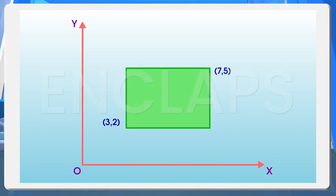How to find out? Which of the given two coordinates is the coordinate of the lower left corner? It is 3, 2. Since the y-coordinate is 2, the height from the x-axis to it is 2. Since the bottom side is parallel to the x-axis, the other corner of this side is also at the same height. That is, the y-coordinate of this point is 2. Now, find the x-coordinate of this point.